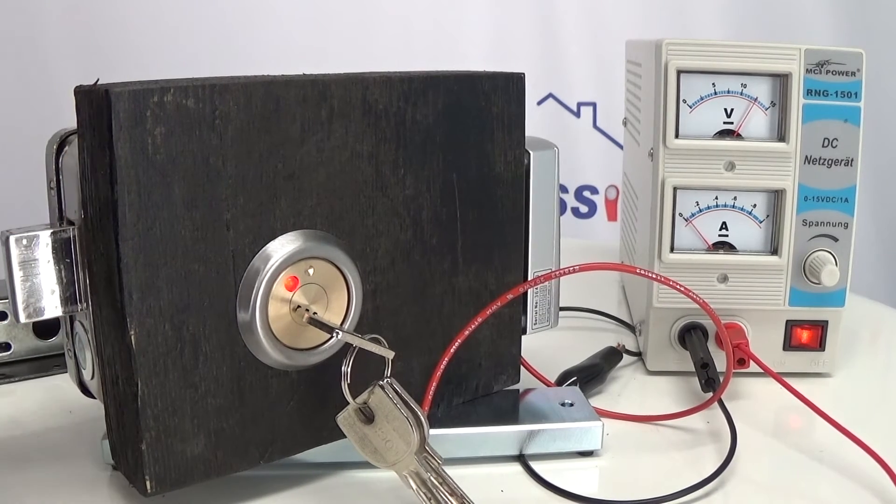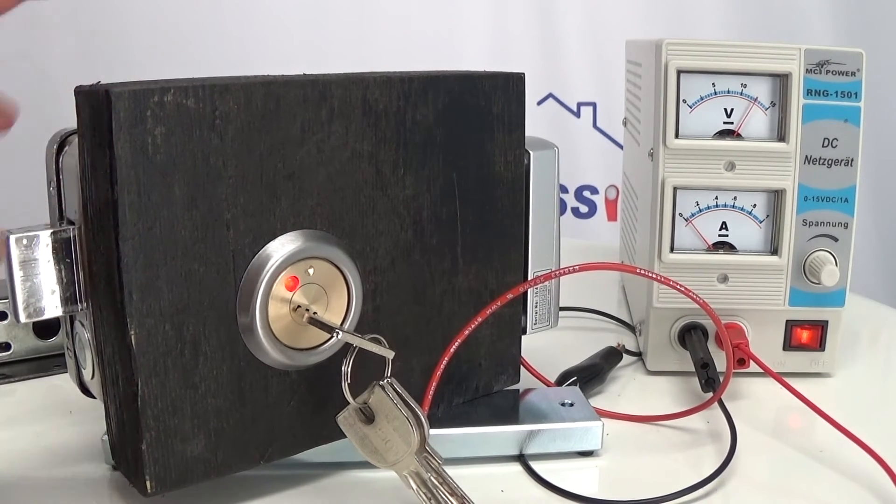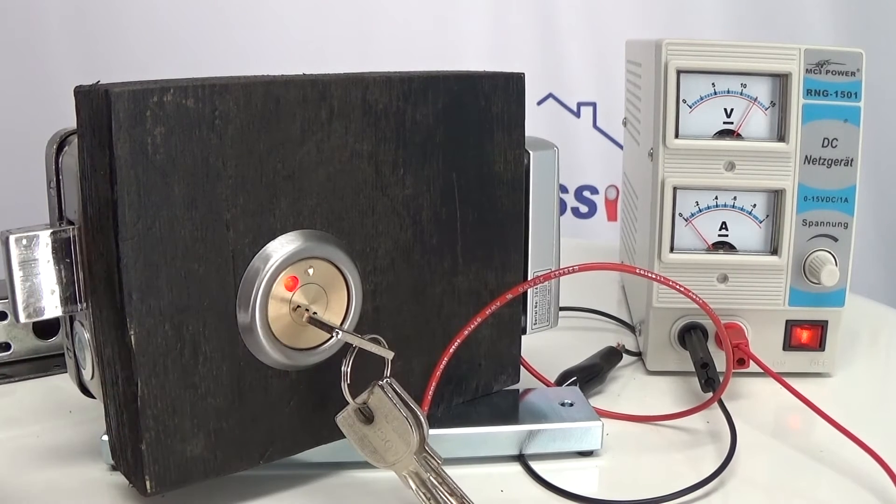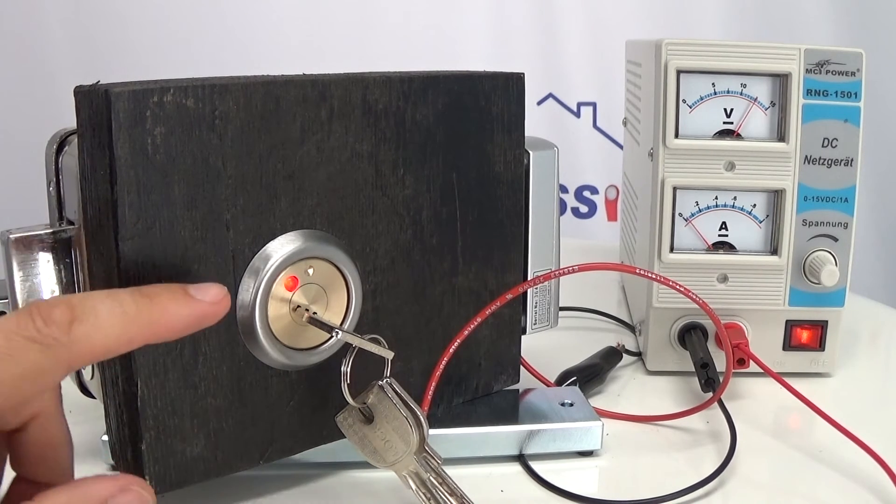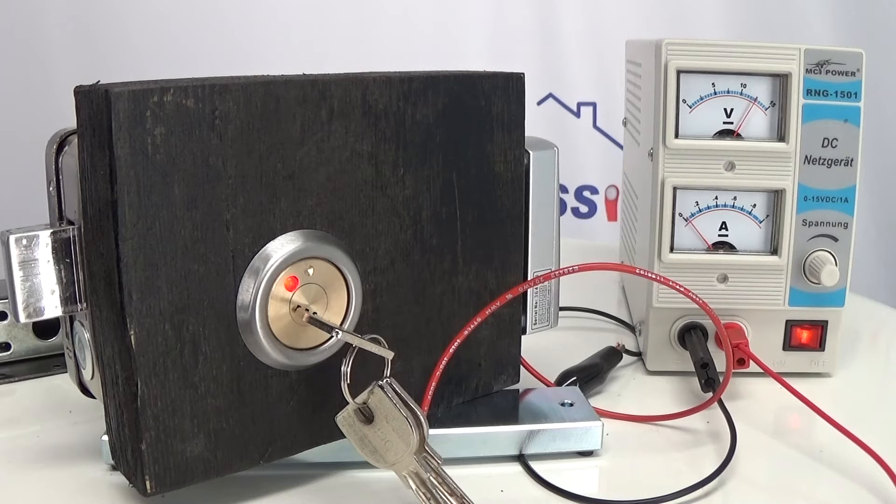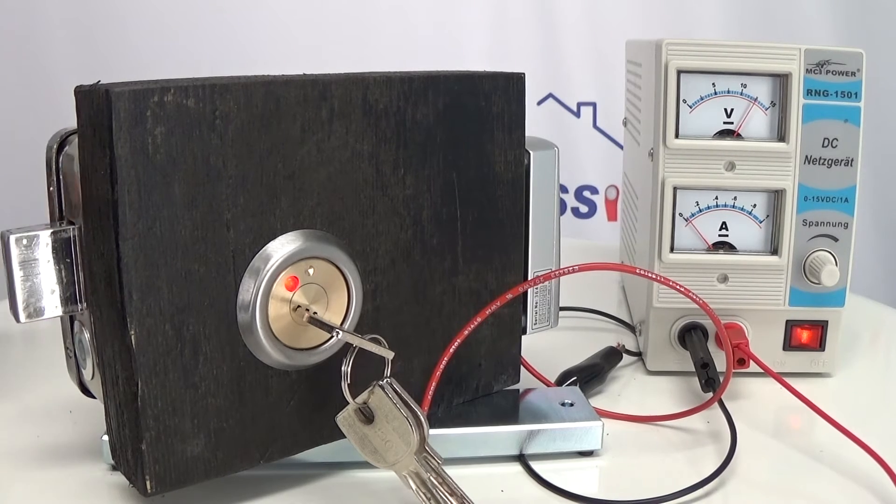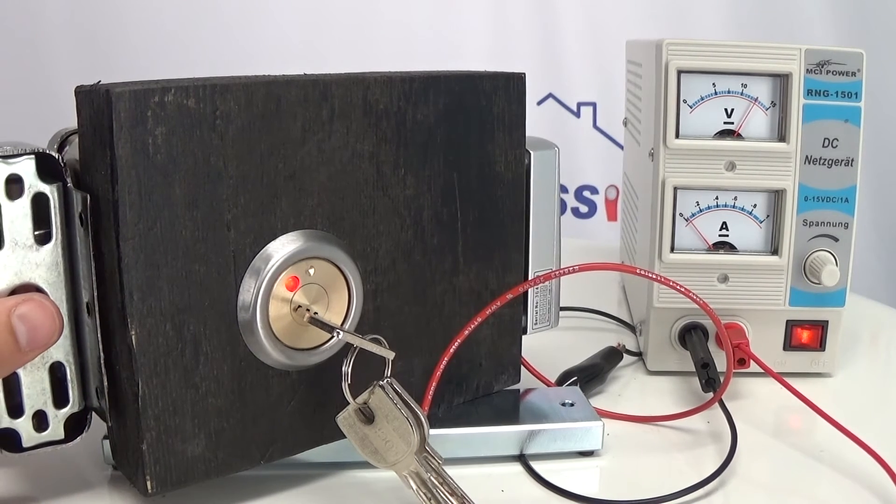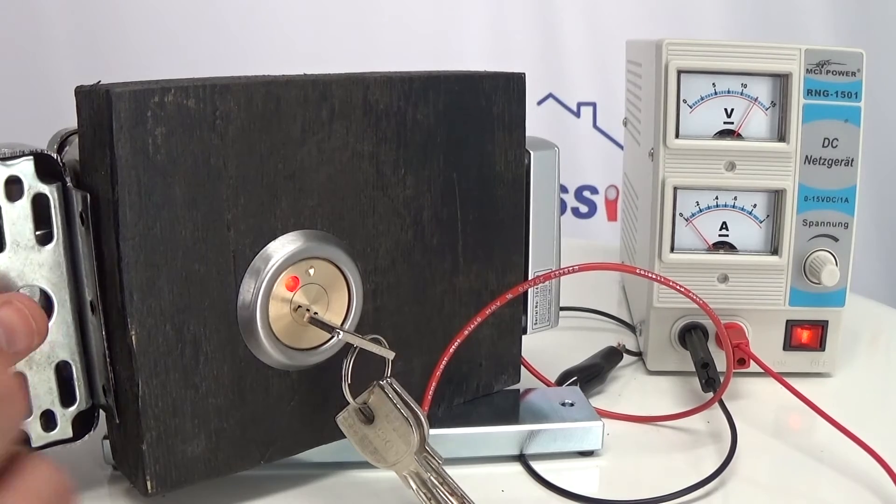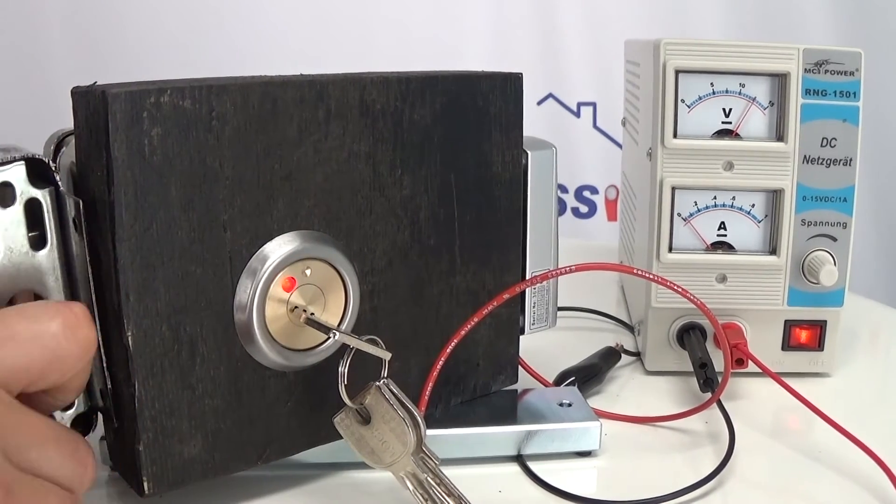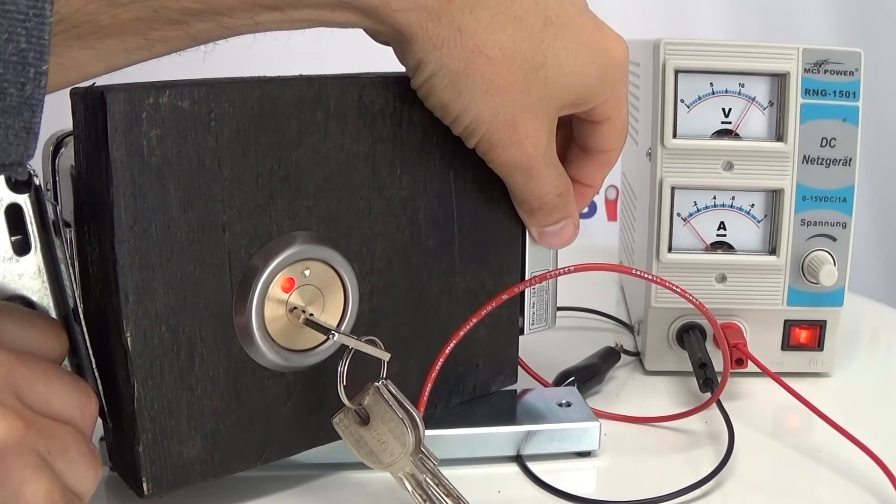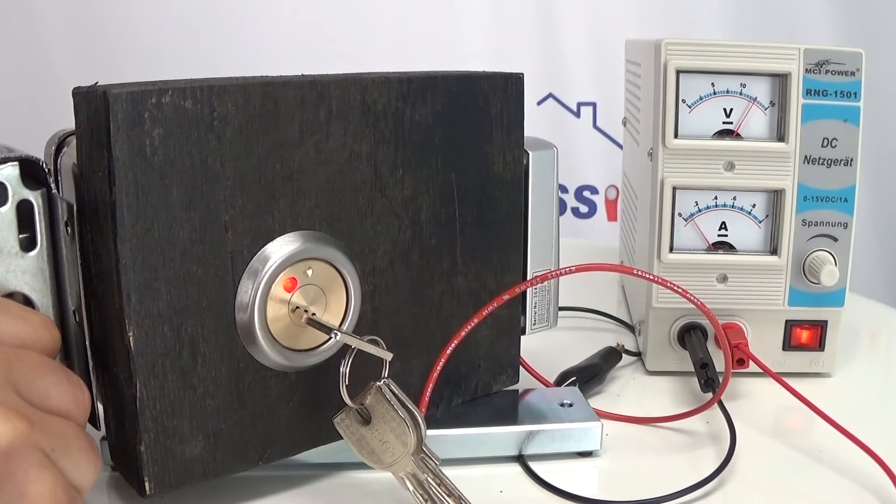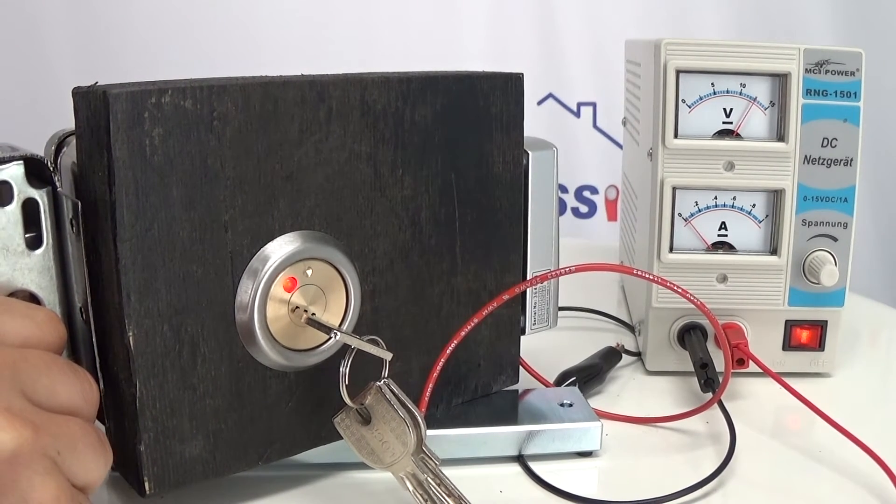The good thing about this lock is its power consumption. Even though it has LED to indicate the status of the door, it only uses 50mA without the door using its motor. Once it is using its motor to unlock the door, it will use a maximum of 300mA, but as you can see that is only for a very short moment.